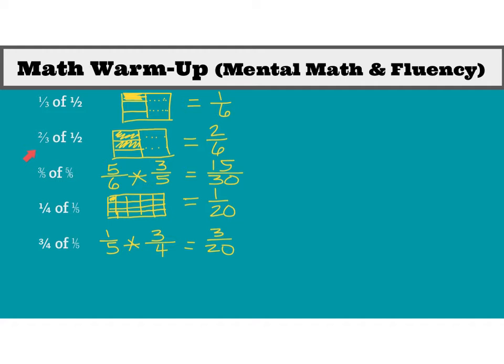Let's take a look at number two: two-thirds of one-half. I took my picture, divided it in half, and then divided that half into thirds and colored in two parts for the two-thirds section. That's two out of a total of six parts, which is our answer. But also, if we had multiplied two-thirds times one-half, we would have also gotten two-sixths.